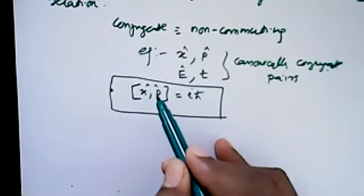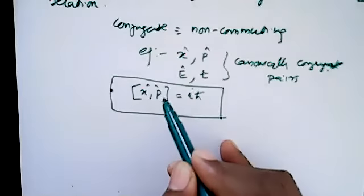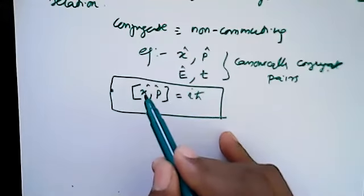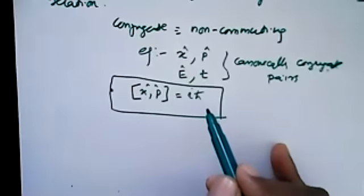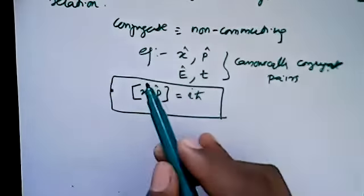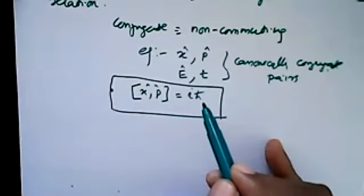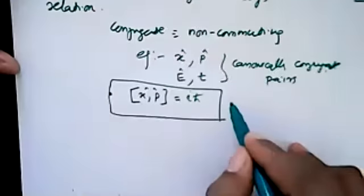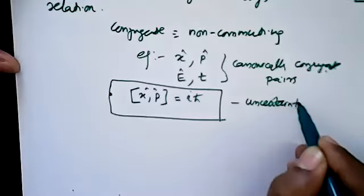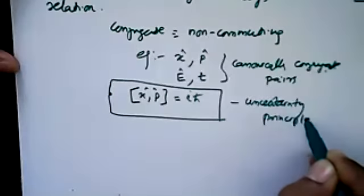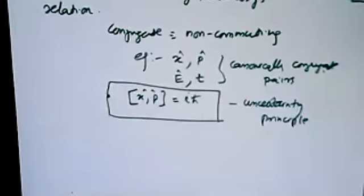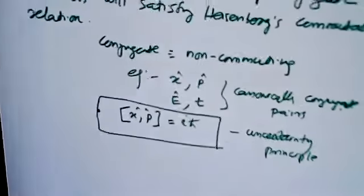You can apply this to any canonically conjugate pair — not only x and p. Energy and time also gives iħ. Angular displacement and angular momentum also gives iħ. Any pair of canonically conjugate operators will equal iħ. This is connected with the uncertainty principle. Heisenberg expressed this in a mathematical expression, which was a very remarkable and important postulate.